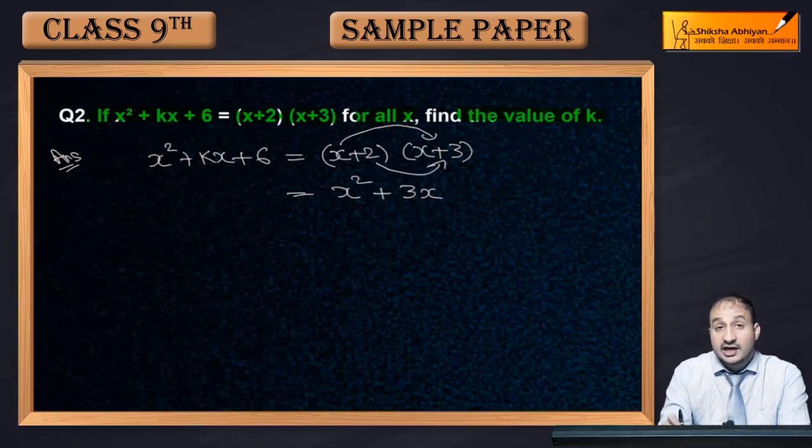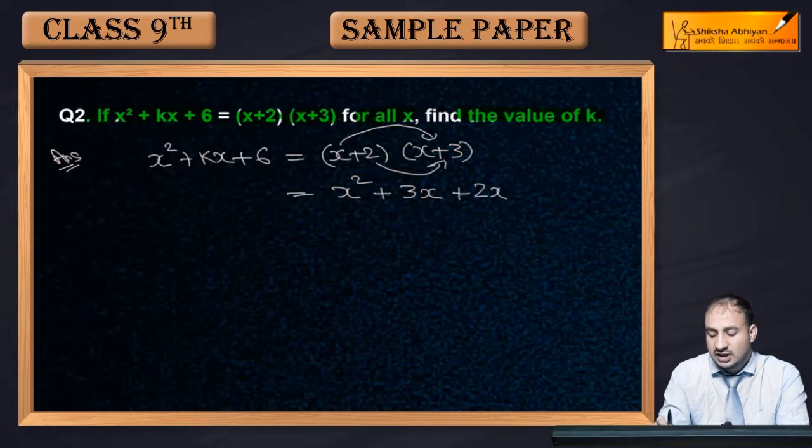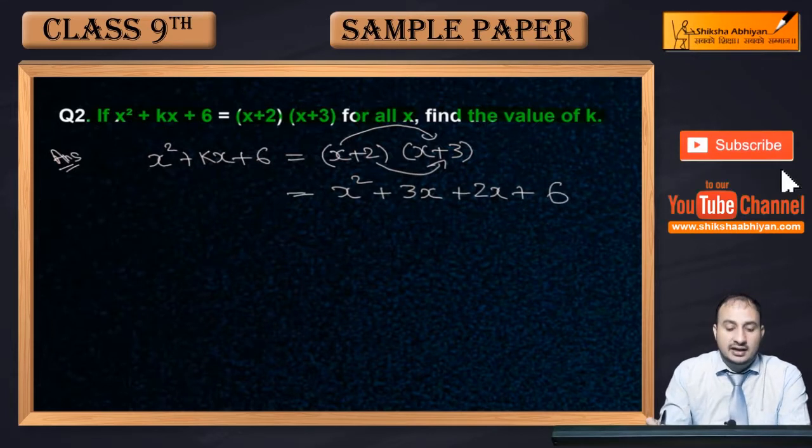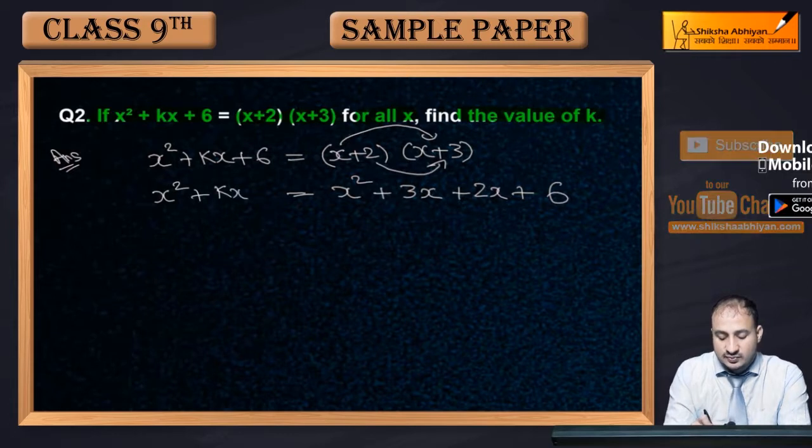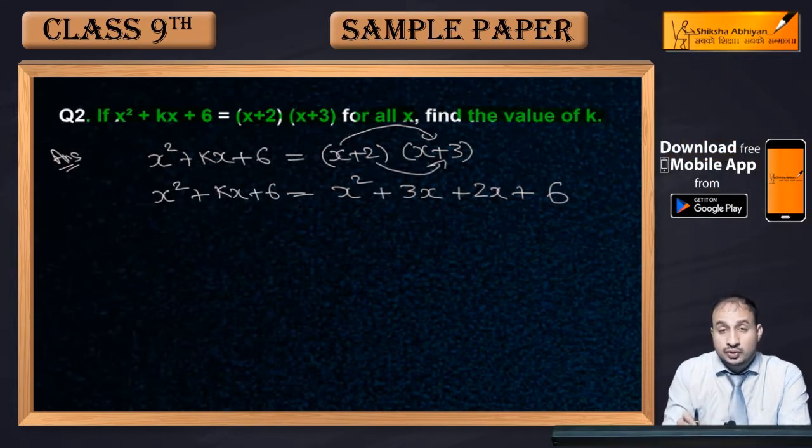After that, if you multiply 2 with the bracket, 2 times x will give 2x, plus 2 times 3 is 6. And here you have x² + kx + 6.